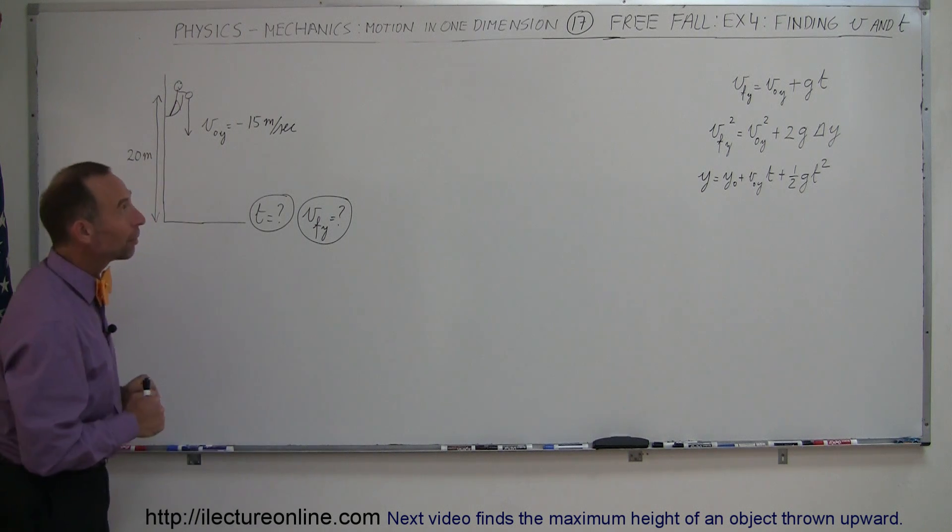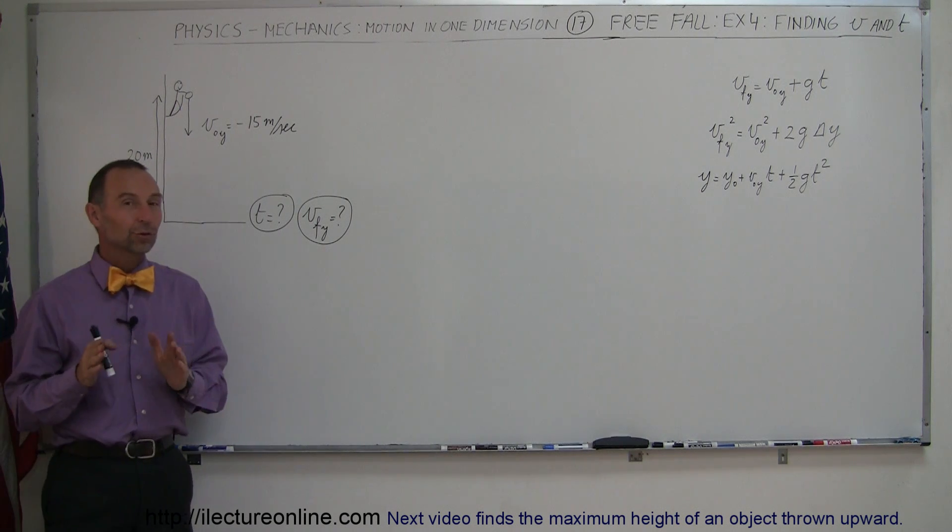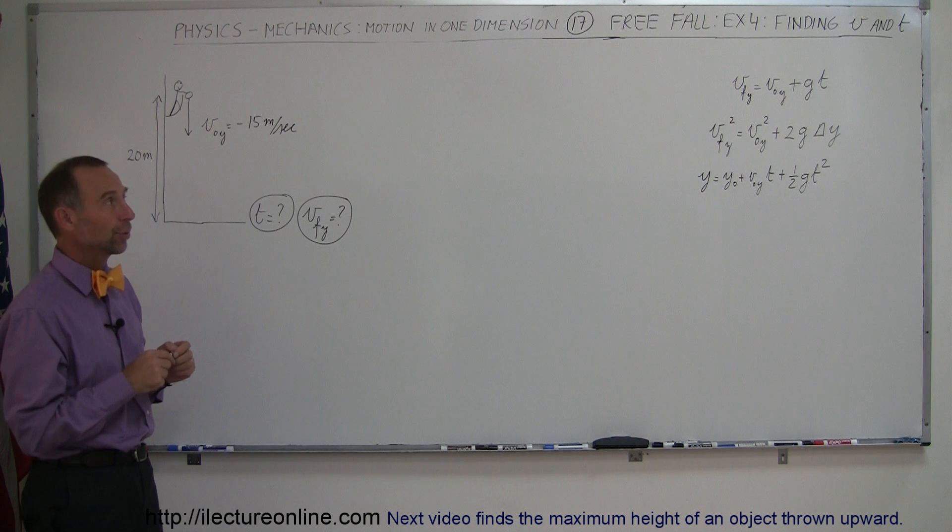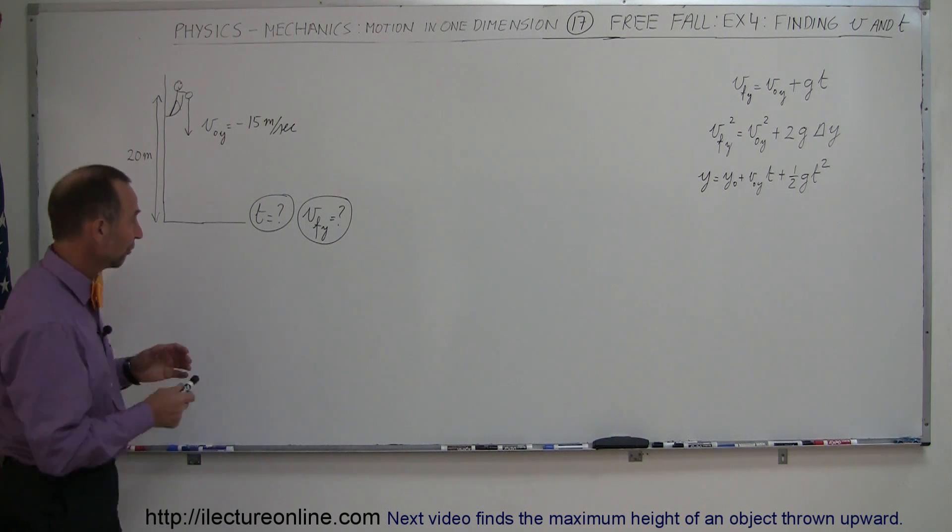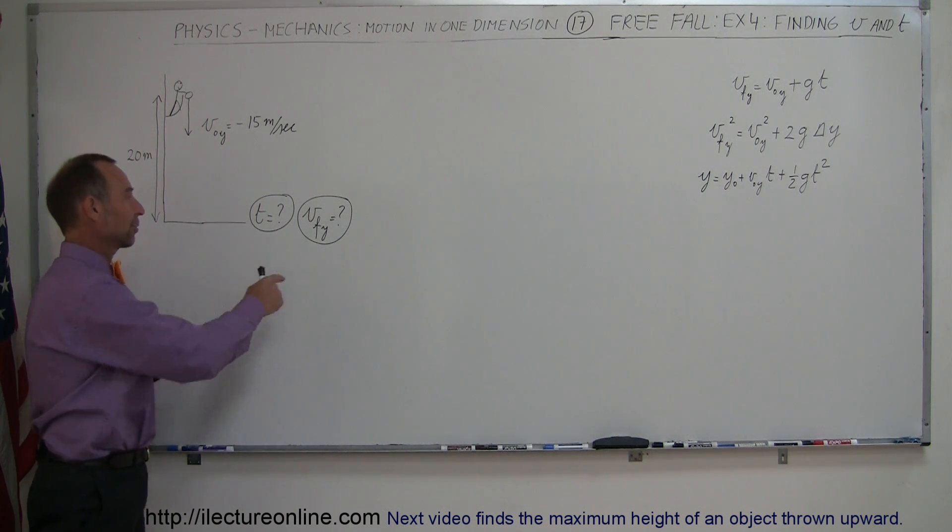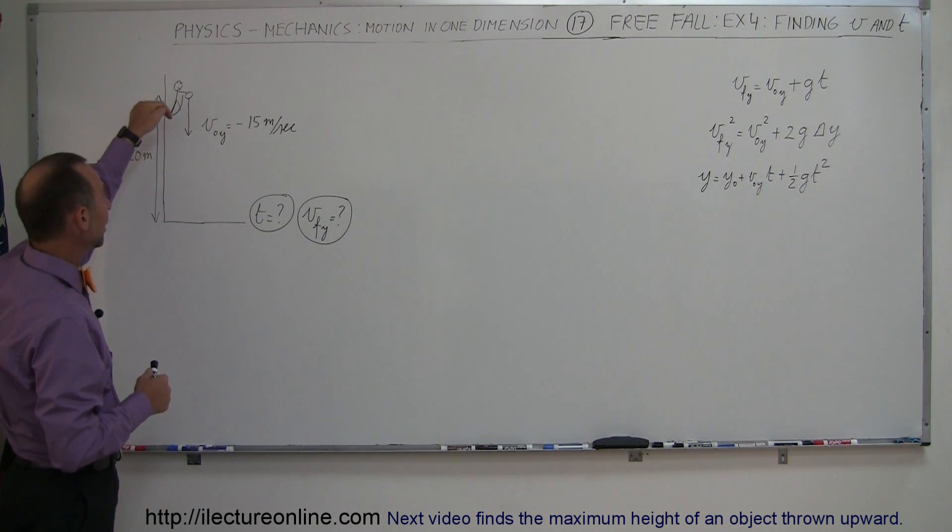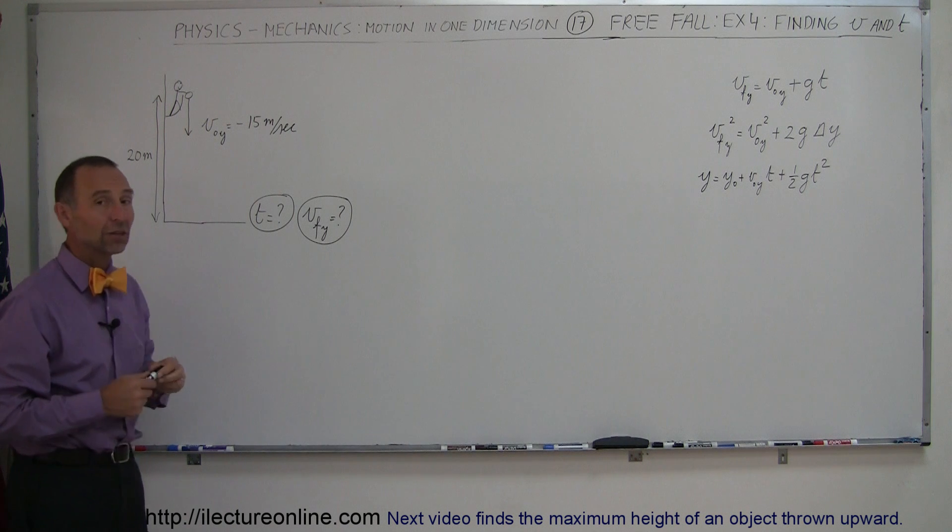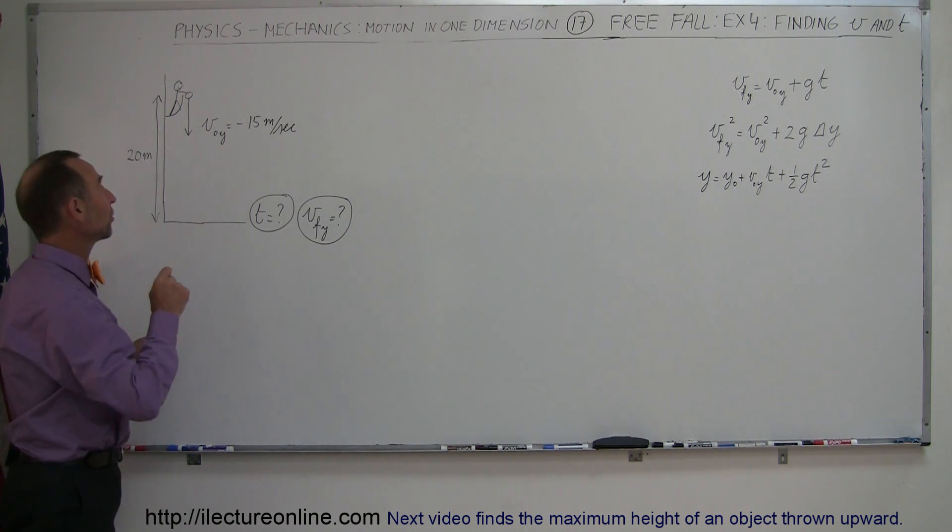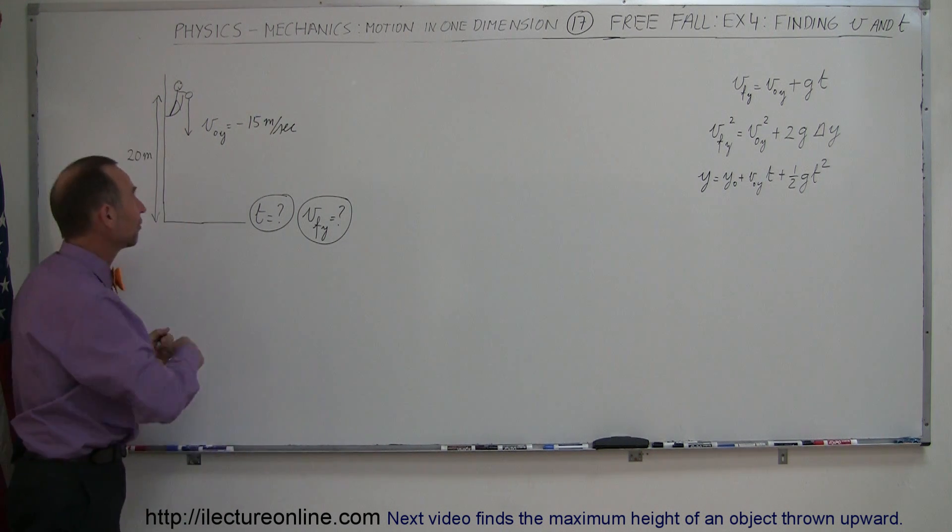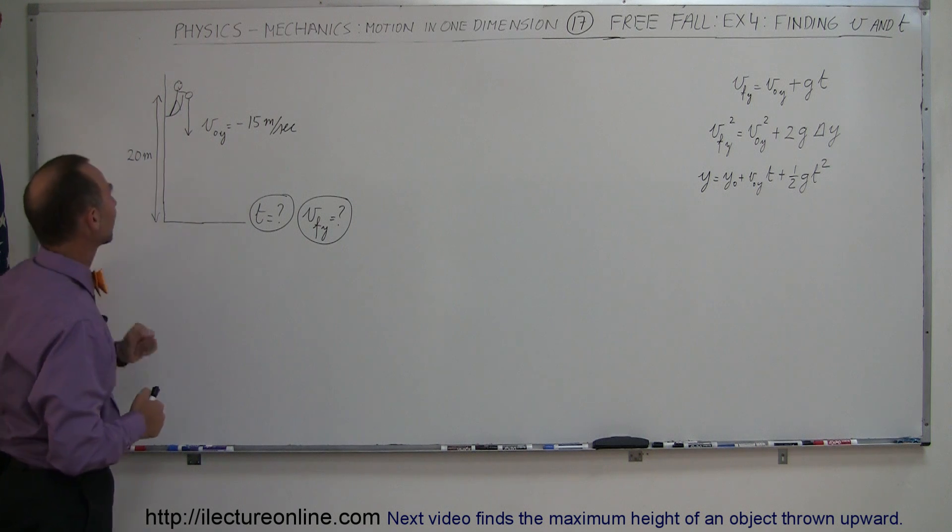On this next free fall example, we're doing something very similar to the previous one, to example number three, this is example number four. We're still finding time before it hits the ground and velocity when it hits the ground, but in this case our initial velocity is going to be negative in the y direction. Instead of throwing it up at 15 meters per second, we're going to be throwing it down at 15 meters per second, starting at a height of 20 meters.